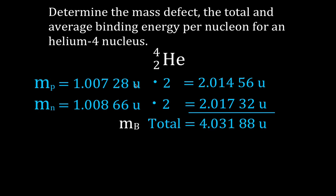Then we're going to look up what is the rest mass — the mass of a helium-4 nucleus in atomic mass units. And that is 4.00153 atomic mass units.